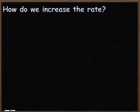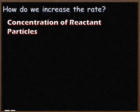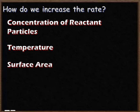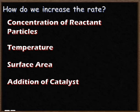To summarize, there are four key factors that we can use to increase the rate of a chemical reaction. First, increasing the concentration of the reactant particles gives a faster rate. Second, a higher temperature means a faster rate. Third, increasing the surface area increases the rate of reaction. And finally, the addition of a catalyst makes reactions move faster, increasing the rate.